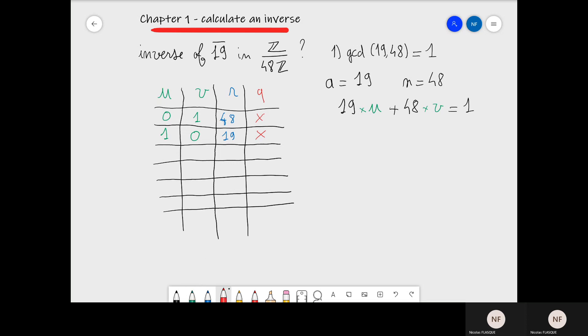The quotient here is 2. So 2 times 19 is 38. Let's compute line number 2 as line 0 minus 2 times line 1. Here it's 10. Here it will be 0 minus 2 times 1, which is minus 2. And here, 1 minus 2 times 0 will be 1. Let's go on. Now it's 19 divided by 10. The quotient is 1, and line 3 is line 1 minus 1 times line 2.